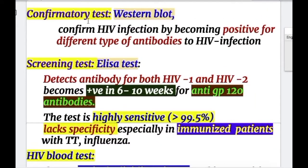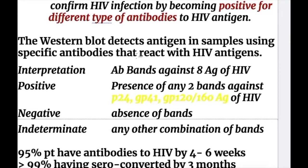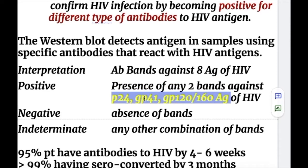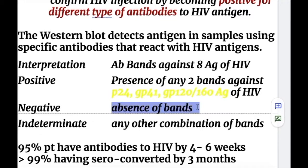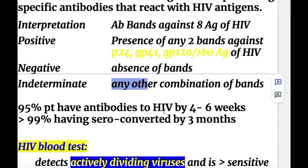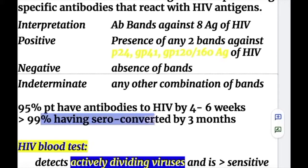The confirmatory test is the Western blot test. It confirms HIV infection by detecting antibodies to HIV-1 and HIV-2, using specific antibodies that react with HIV antigens. The test is positive when any two bands are present against P24, P41, GP120, or GP160 antigens. It is negative when bands are absent, and indeterminate when any other combination of bands is present. 95% of patients have antibodies by 4 to 6 weeks, and more than 95% have seroconverted by 3 months.